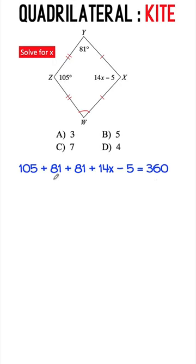Combining like terms, 105 plus 81 plus 81 minus 5 equals 262, copy 14X, and copy the right side.